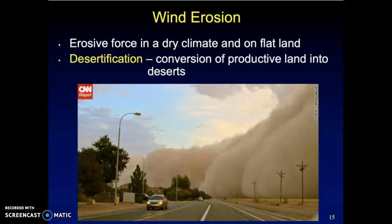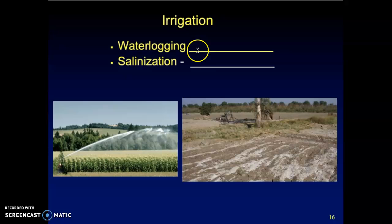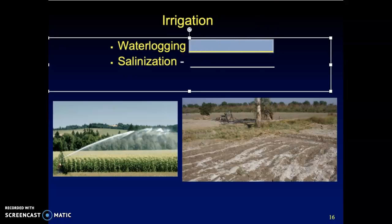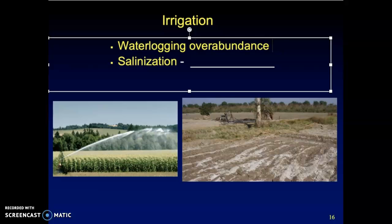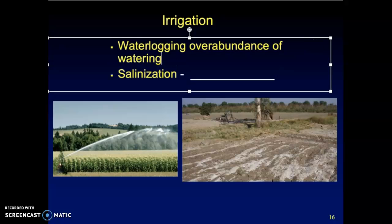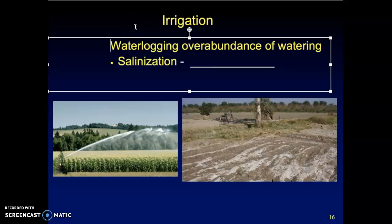Another issue to mention when talking about soil erosion and water is irrigation. We do some irrigation in Illinois depending on location — sometimes we actually waterlog and flood our fields. Waterlogging is an overabundance of watering on an agricultural field. We'll talk more about this in the next lecture.